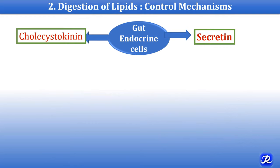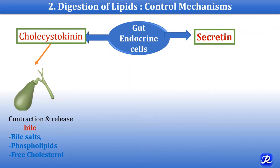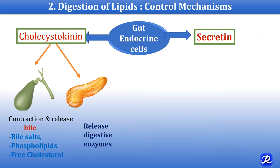Digestion of lipids is carried out by hydrolytic enzymes, and the secretion of hydrolytic enzymes is controlled by hormones, namely cholecystokinin (CCK) and secretin. Cholecystokinin is released by cells in the mucosa of the lower duodenum and jejunum, stimulated by the presence of lipids. CCK acts on the gallbladder and causes its contraction and release of bile, which contains bile salts, phospholipids, and free cholesterol. CCK also acts on exocrine cells of the pancreas, causing release of digestive enzymes which play an important role in digestion of lipids.